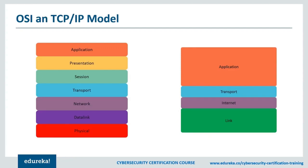Those are the key differences between the OSI and TCP/IP model. Anytime I refer to layers through the course of this video I'm going to be referring to the OSI model, in part because it makes it easier to differentiate the different functionality. The OSI model provides more granularity, so it's better to talk about functionality in terms of its layers.